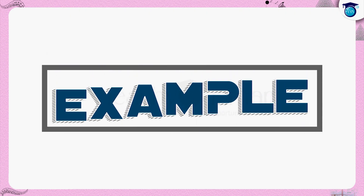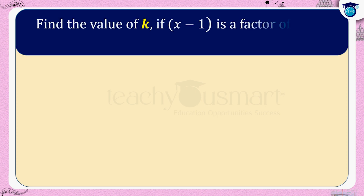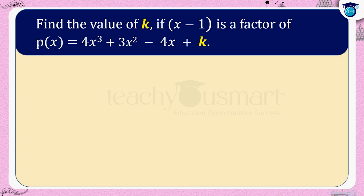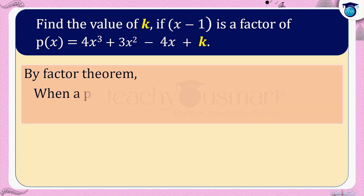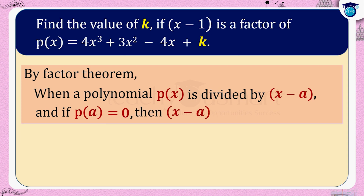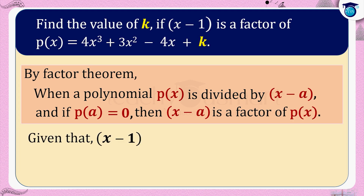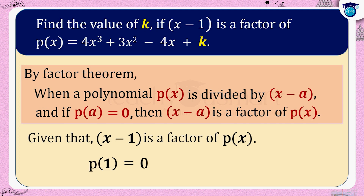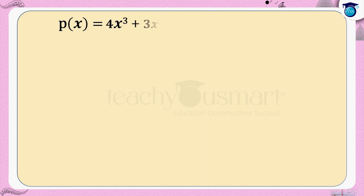Let's do another application problem: find the value of k if x minus 1 is a factor of p of x equals 4x cubed plus 3x squared minus 4x plus k. By the factor theorem, when a polynomial p of x is divided by x minus a and if p of a equals 0, then x minus a is a factor of p of x. Given that x minus 1 is a factor of p of x, so p of 1 equals 0.